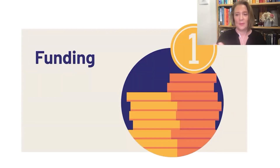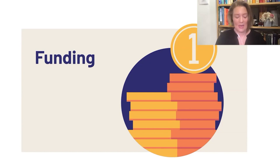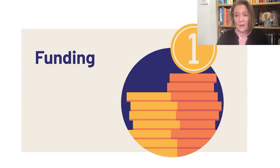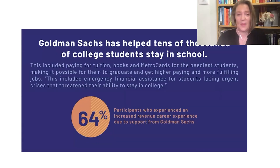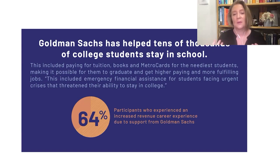The first step is funding. If you are using data of any sort in your data journalism product or story, you need to know who paid for the collection of that data. For example, you can find really good research coming out of Goldman Sachs for how well they helped vulnerable young people get into college and stay in college. They have research on that.